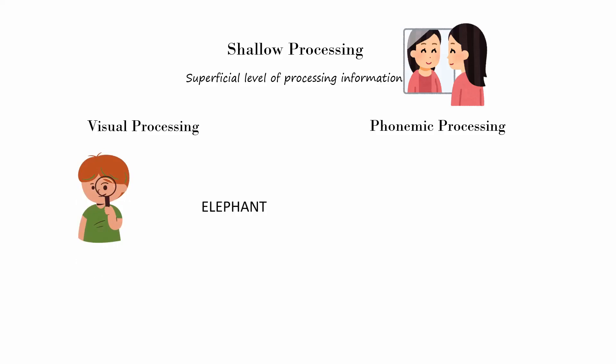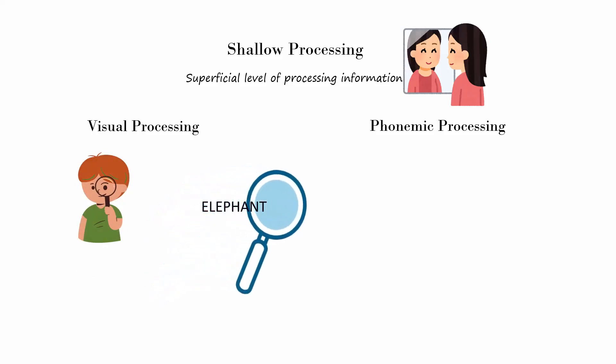For example, seeing the word 'elephant' and noting that all the letters are in uppercase without considering what an elephant is. In phonemic processing, we focus on the sound of words — for example, hearing the word 'cat' and recognizing how it is pronounced and understanding that it rhymes with 'bat' and 'hat,' but not thinking about what a cat actually is.